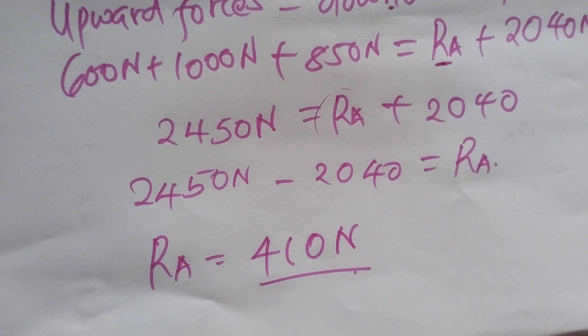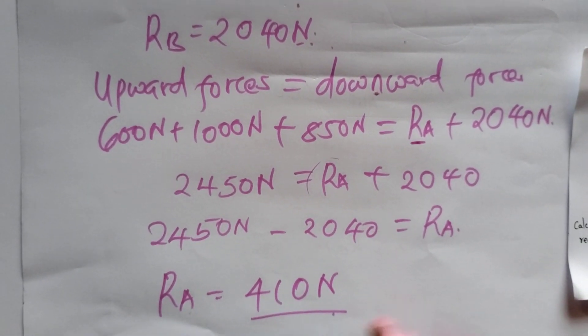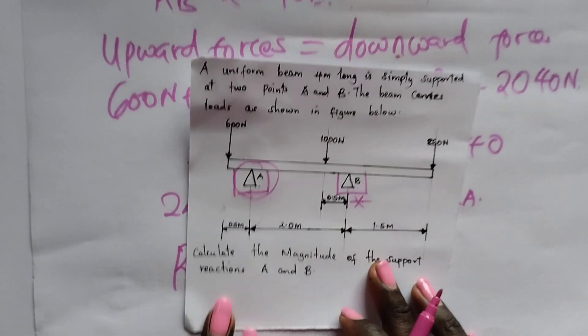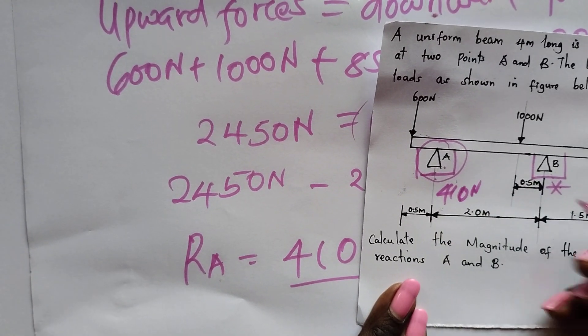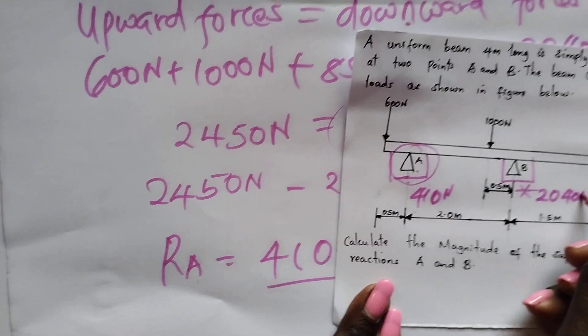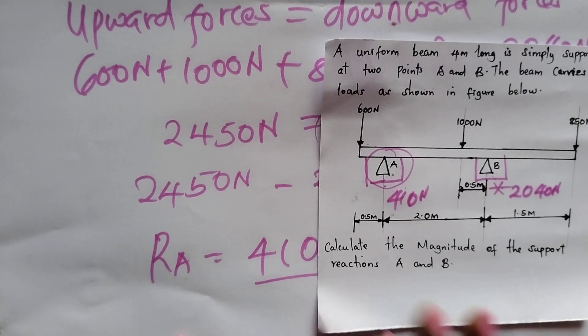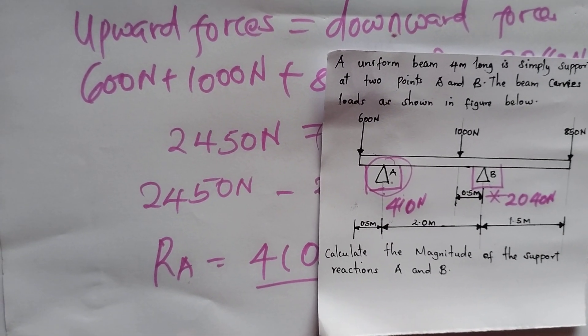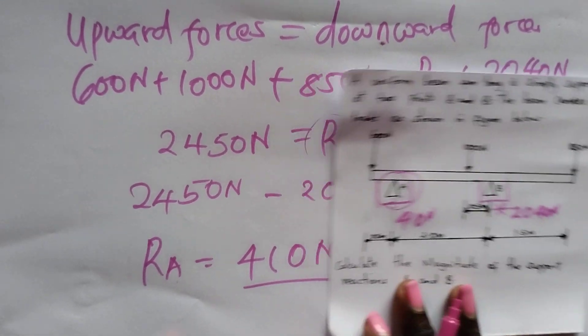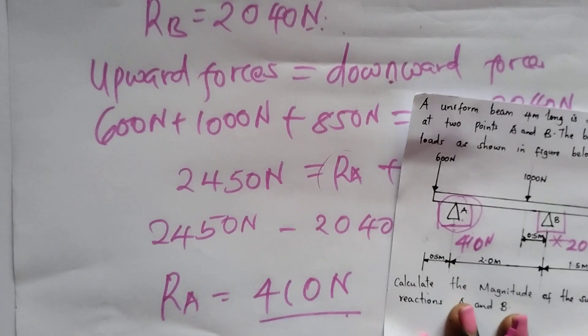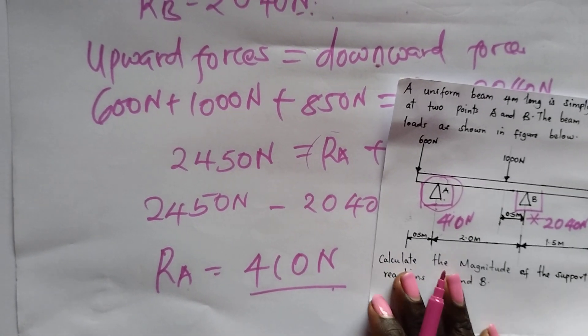Hope you are getting the same. So this is the required answer in our question. Reaction A would be 410 newtons. Reaction B is 2040 newtons. So it was that simple. And if you are given such a question now, you can be able to meet it without any worry. Thank you for watching. I hope you do more practice on the same. I'll see you on our next class.